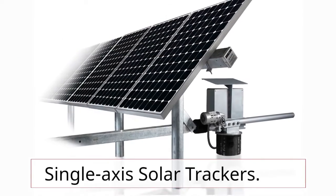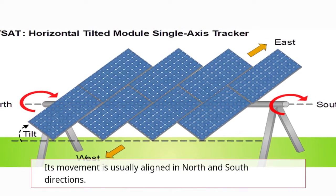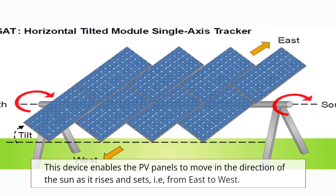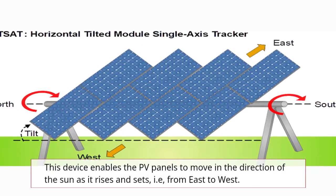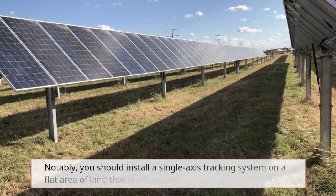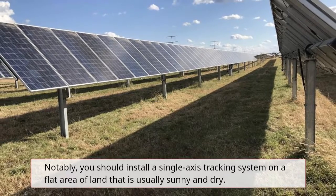Single axis solar trackers movement is usually aligned in north and south directions. This allows the device to move the panels in the direction of the sun as it rises and sets, from east to west. Notably, you should install a single axis tracking system on a flat area of land that is usually sunny and dry.